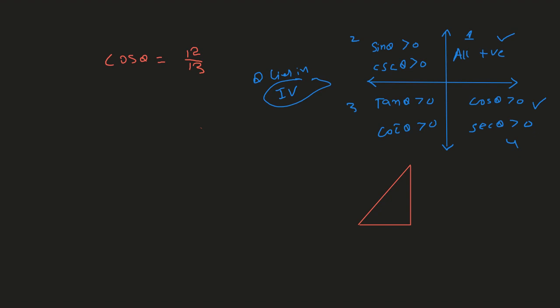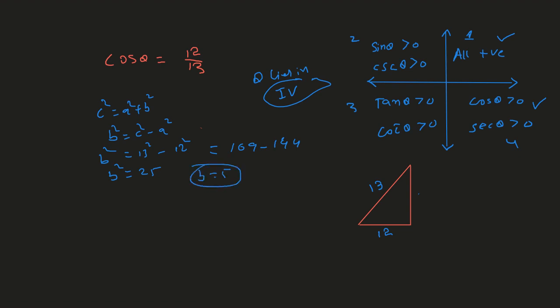Now set up the triangle. It's given that cosine theta is 12 over 13. Since cosine is base over hypotenuse, the base is 12 and hypotenuse is 13. By the Pythagorean theorem, c² = a² + b², so b² = 13² − 12² = 169 − 144 = 25, giving b = 5. The triangle is now complete.